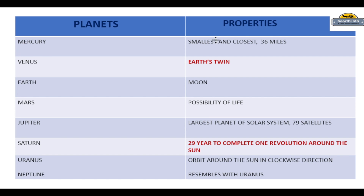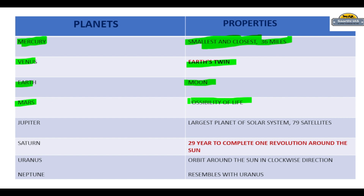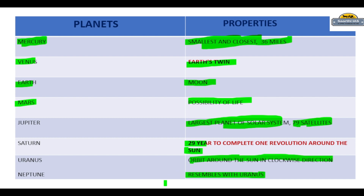Now let us look at a summary slide of planet properties one by one. Mercury: smallest and closest planet, 36 million miles from the sun. Venus: also called Earth's twin. Earth has its own moon. Mars: possibility of life after Earth. Jupiter: largest planet in the solar system with 79 satellites. Saturn: takes 29 years to complete one revolution around the sun. Uranus: orbits in a clockwise direction. Neptune: resembles Uranus and is the farthest planet in the solar system.